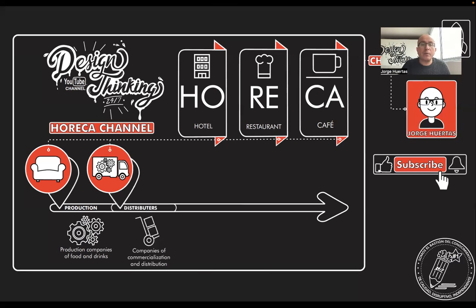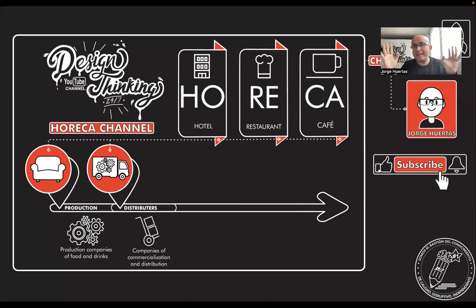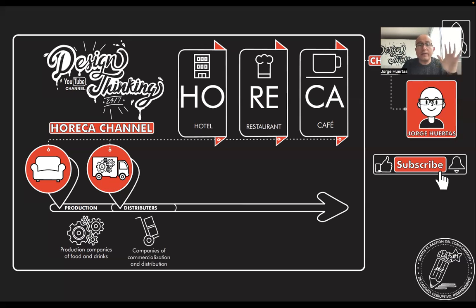Distributors are extremely important. Companies of commercialization and distribution are critical because if I want to run any kind of business — a hotel, a restaurant, or a cafe — I need to be aware of all the different companies that can supply what I need. I need to have multiple options, not just one, because any of them could face a problem.